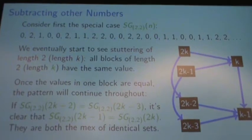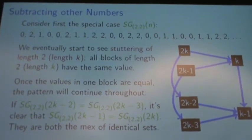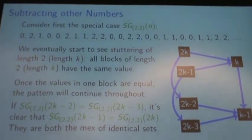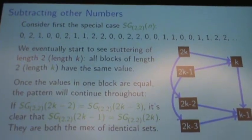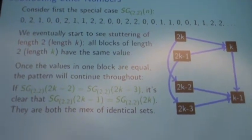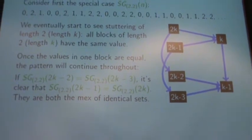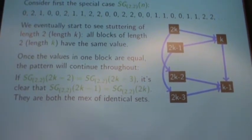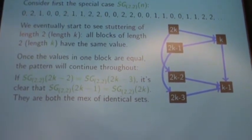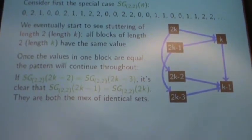For lack of a better word, I call this stuttering of length K — in this case, stuttering of length 2. So we start to see this pattern. At this point it's a little bit mysterious where this comes from, why this begins when it begins. But by looking at the digraph, we can see that once it happens once, it's going to continue.